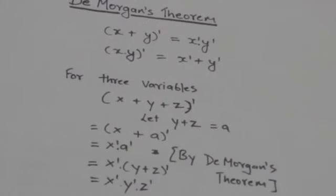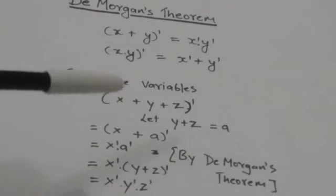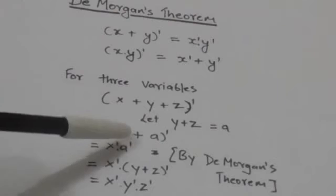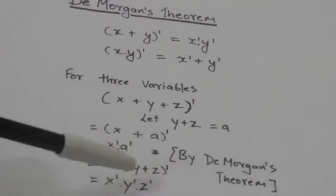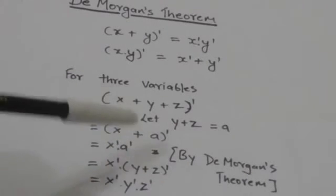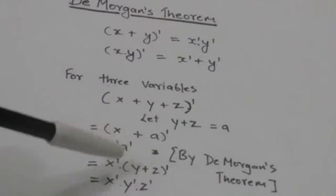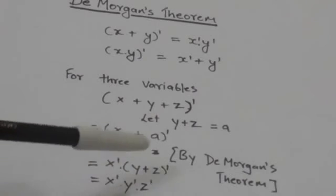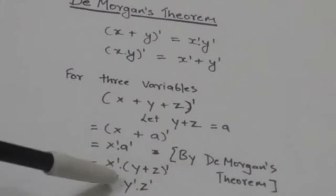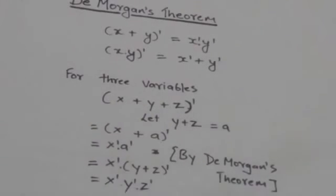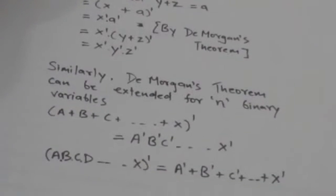The expression now becomes complement of (X + A). Applying De Morgan's theorem, it becomes X complement AND A complement. Substituting the value of A, it becomes X complement AND complement of (Y + Z). Applying De Morgan's theorem again on complement of (Y + Z) gives Y complement AND Z complement.